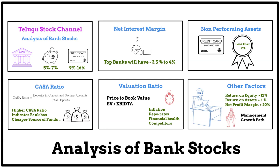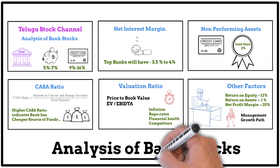Other factors include Return on Equity greater than 12%, Return on Assets greater than 1%, and Net Profit Margin greater than 20%. Once we select a bank with good management, we calculate the Price-to-Book Value and EV divided by EBITDA to find the average fair value. By following these steps, we can achieve the best returns from banking stocks. I hope this video helps you select the best banking stocks. Thank you everyone for watching.